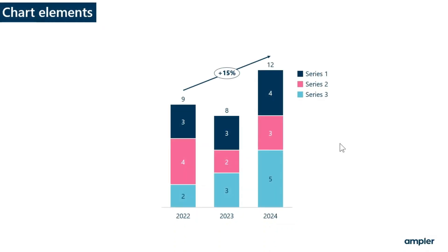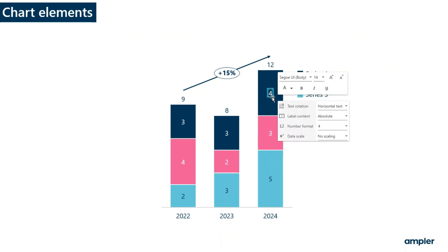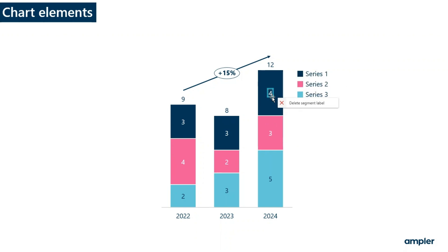Charts consist of several elements which can be selected individually. The main elements are labels, segments, decorators, and axes. When hovering over an element, you'll see an orange frame appear. When selecting an element, the frame turns blue and the format menu opens next to the element. All elements will also have a context menu for additional options.